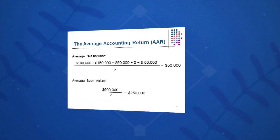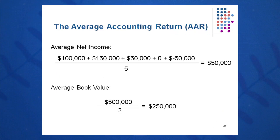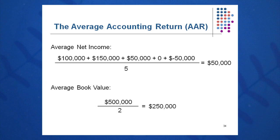For the AAR, we build an income statement. You can simply get the average net income by taking the bottom line, adding it up, and dividing by five because you have five years. So $100,000 + $150,000 + $50,000 + $0 + $50,000 divided by 5 gives you an average net income of $50,000.